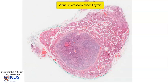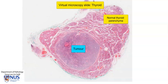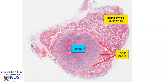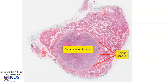Hello, this is a virtual microscopy slide of the thyroid, and we can see that this is the normal thyroid gland with a somewhat lobulated appearance on low magnification, and here is the area of pathology. What we have is a rounded tumor nodule, and if you follow the cursor, we can see that there is a pinkish capsule that appears to be completely surrounding this nodule. So we have an encapsulated tumor nodule.